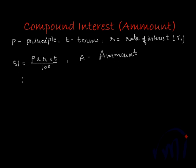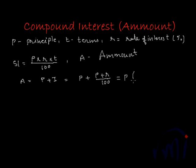For the first term, the amount payable at the end of the term is principal plus interest. This is P plus P×R/100. Taking P as common, this becomes P multiplied by (1 + R/100). So the amount at the end of the first term is A1 = P(1 + R/100).